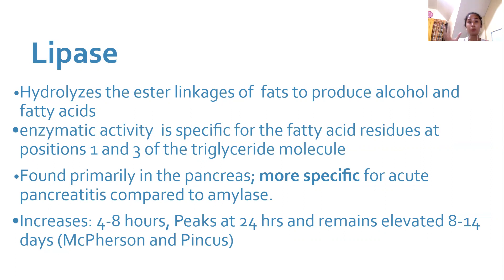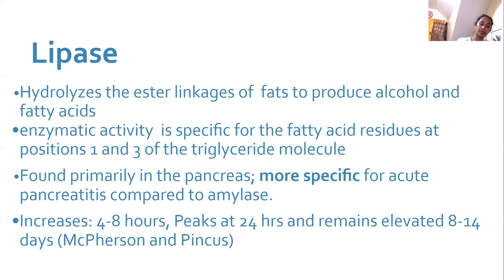The pancreas is an amazing organ with two main functions. As an endocrine organ, it produces hormones: insulin from the beta cells of the islets of Langerhans, and somatostatin from delta cells. As an exocrine organ, it produces enzymes including lipases and amylases. It is important in managing glucose levels, breaking down fats, and digestion.